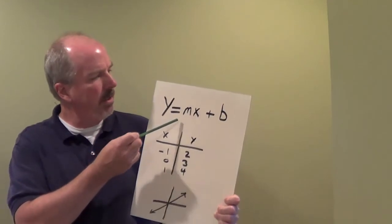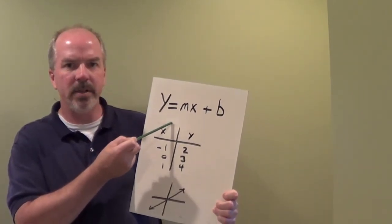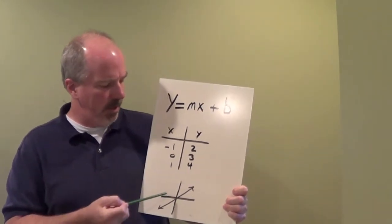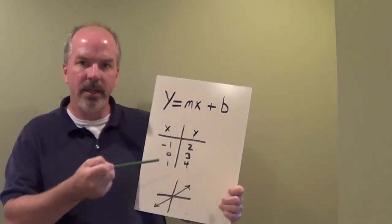So we'll be working with a slope-intercept form, which of course is y equals mx plus b, a basic chart, and a graph. We'll be going back and forth and translating these.